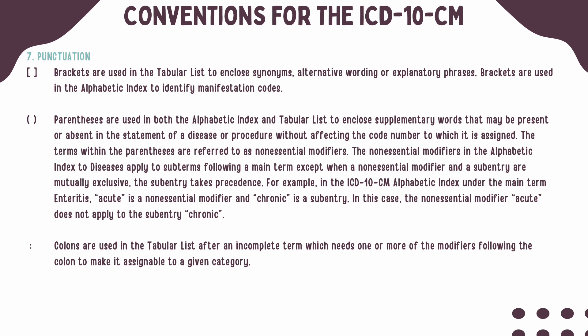Brackets will be found in both the alphabetic and the tabular list. When they are found in the alphabetic index, they will identify manifestation codes, and those codes should always be coded in that specified order. When they are located in the tabular list, you will see synonyms, alternative wordings, and even explanatory phrases.